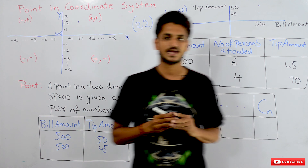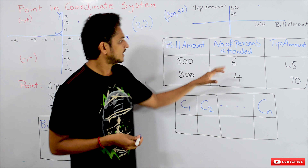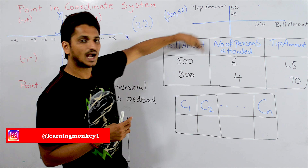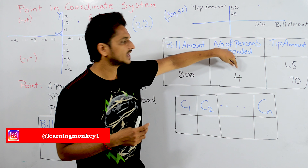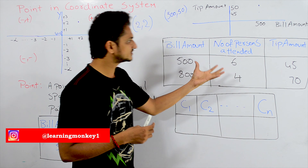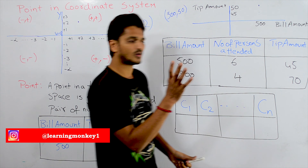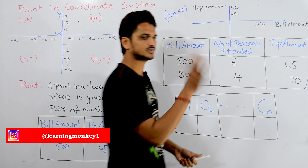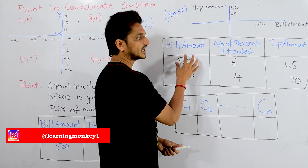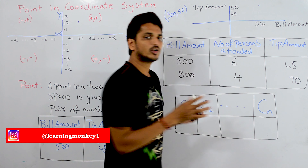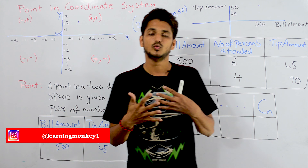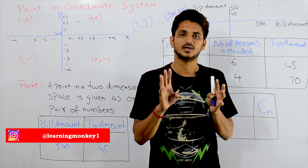Let's check one more example. Here we consider three columns: bill amount, number of persons attended, and tip amount. A group of six members attended a restaurant, made a bill amount of 500, and gave a tip of 45. To represent this data in coordinate space, we need a three-dimensional coordinate space.